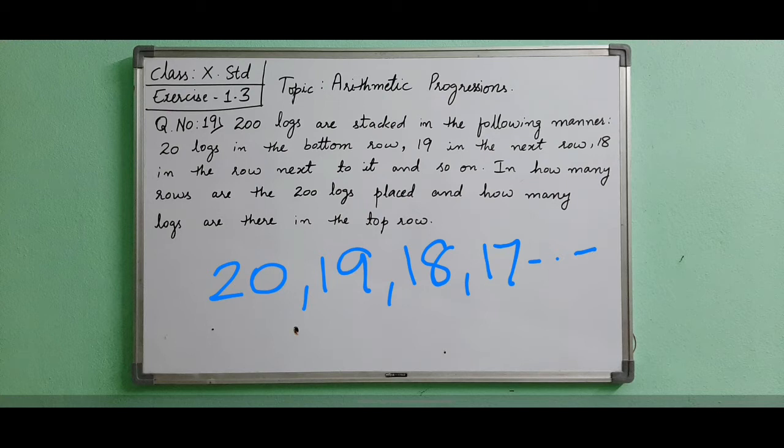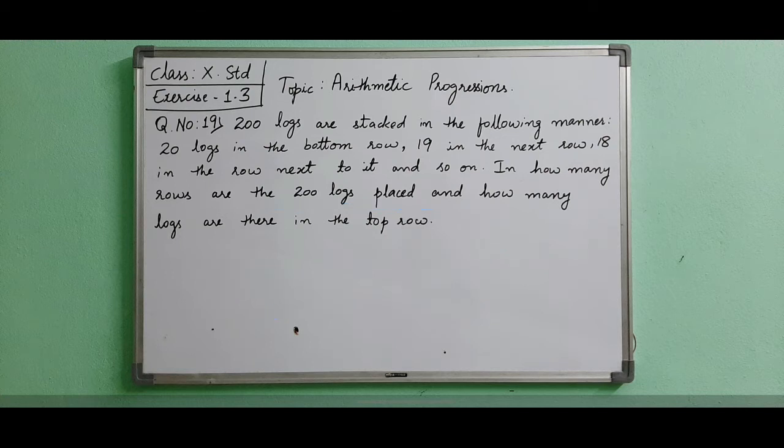So to place the 200 logs, how many rows will be there? First we need to find n here. After getting the n value, we have to find the last term. These are the sequence of terms. The bottom side is having 20 logs and the topmost row will have what number of logs. Let's see the solution stepwise.